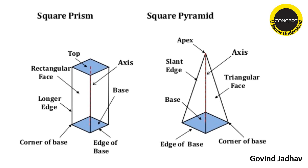Observe the face of the pyramid — it is triangular. Whatever the type of pyramid — triangular, square, pentagonal, or hexagonal — every pyramid has a triangular face. Every pyramid has a triangular face. So the two important differentiating points are: in a prism there is a longer edge and the face is a rectangular face; in a pyramid there is a slant edge and the face is a triangular face. There is also an apex in the pyramid.